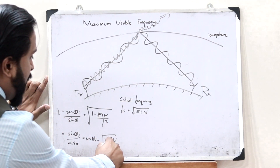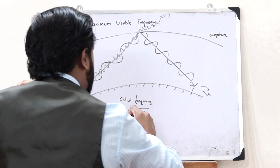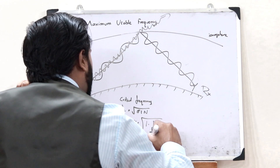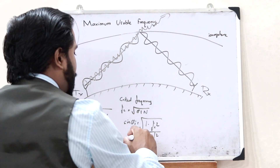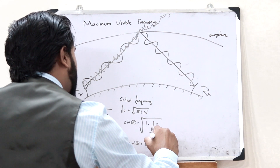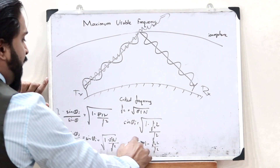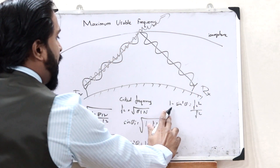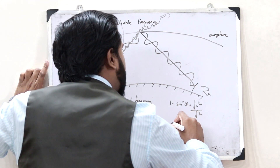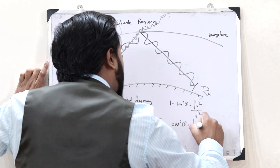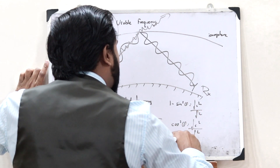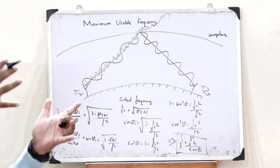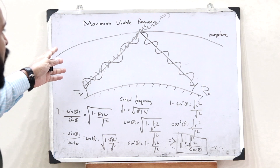Substituting the critical frequency, we get sin(θi) equals the square root of 1 minus fc² divided by f². Squaring both sides: sin²(θ) equals 1 minus fc²/f². Rearranging: 1 minus sin²(θ) equals fc²/f². Since 1 minus sin²(θ) equals cos²(θ), we get cos²(θ) equals fc²/f², which implies f equals fc divided by cos(θ). This is the maximum usable frequency in the case of sky wave propagation.